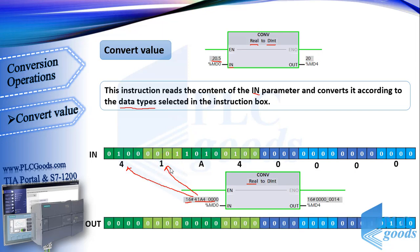This program tries to store 20.5 in Double Integer format. This format uses 31 bits to store numbers and the last bit is used for the number sign. So this format cannot store the fractional part, and the result will be 20.